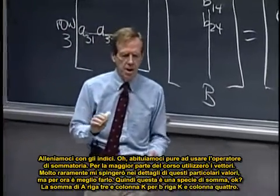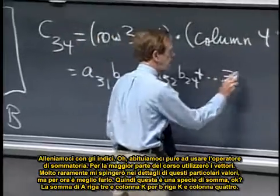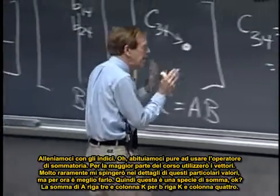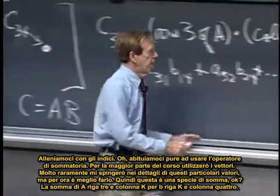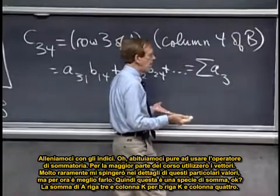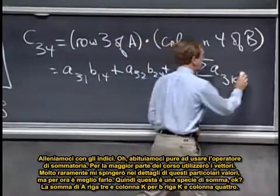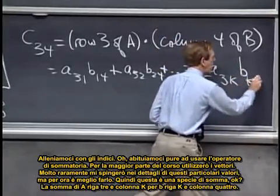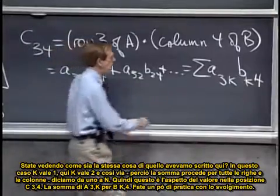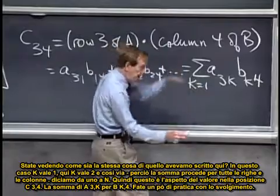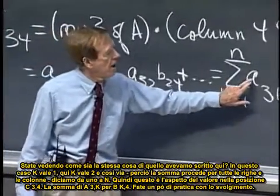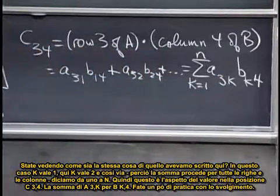Just practice with indices. Let me even practice with a summation formula. Most of the course I use whole vectors. I very seldom get down to the details of these particular entries, but here we better do it. So it's some kind of a sum, right, of things in row three, column K, shall I say, times things in row K, column four. You see that's what we're seeing here. This is K is one, here K is two. So the sum goes all the way along the row and down the column, say one to N. So that's what the C three four entry looks like, a sum of A three K, B K four. Just takes a little practice to do that.